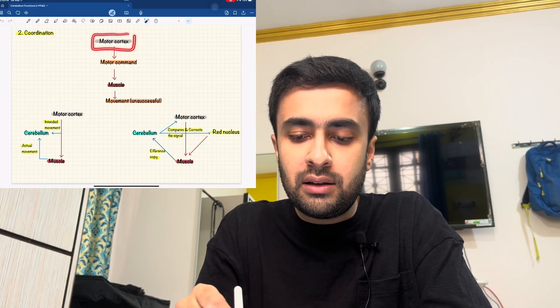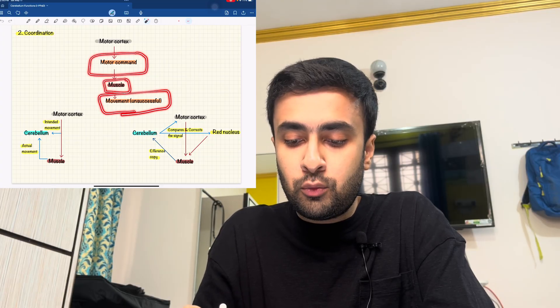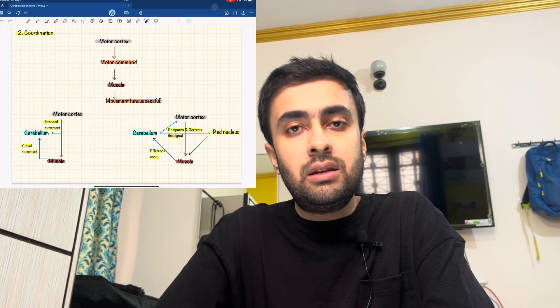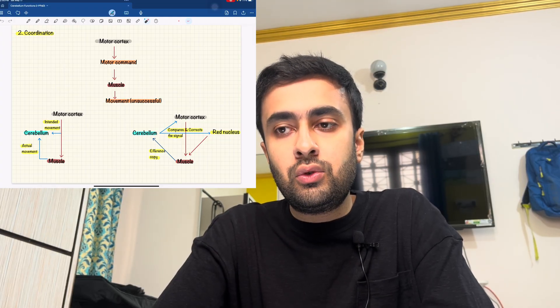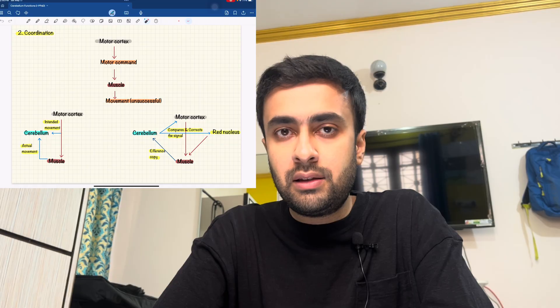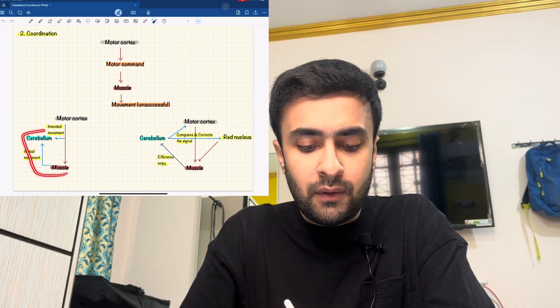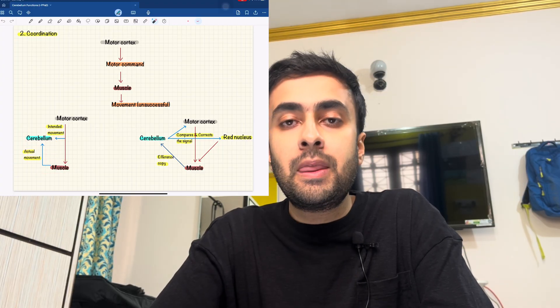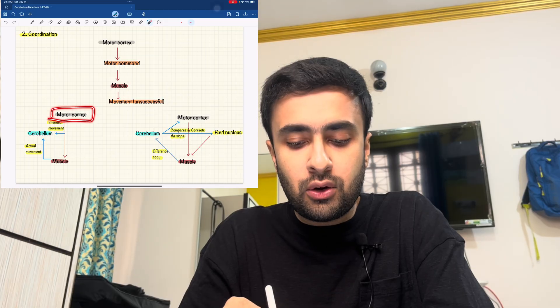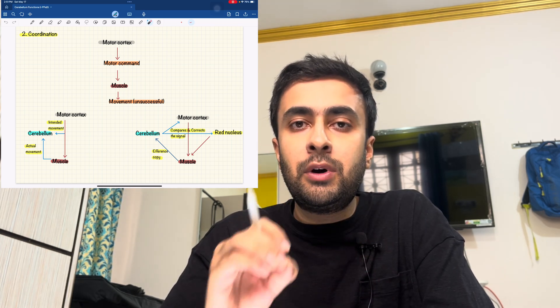The signal generated from the motor cortex in the form of a command reaches the muscle, but even though movement results, it is unsuccessful. This is the problem that lies with the motor cortex. We have the cerebellum to correct the movement through a very unique mechanism. It not only helps the motor cortex correct the signal, but it is constantly receiving signals from the muscle itself — the muscle acts as a sensor, continuously sending signals about length, tension, and position to the cerebellum via the muscle spindle.